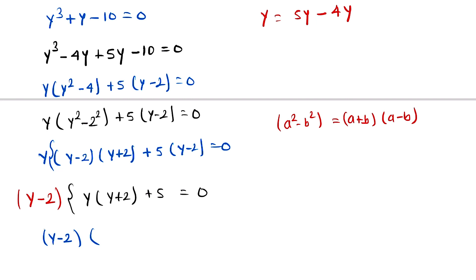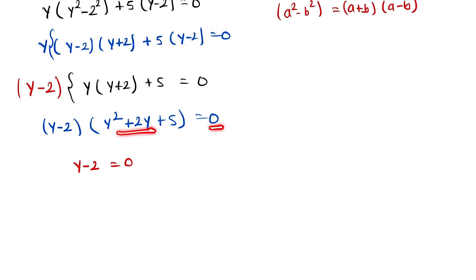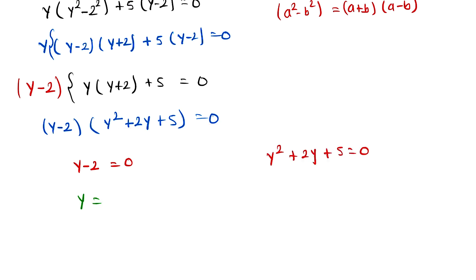Expanding, this gives two equations: y − 2 = 0, so y = 2; and y² + 2y + 5 = 0. For y = 2, this is a real solution. We now check whether y² + 2y + 5 = 0 gives real solutions by computing the discriminant b² − 4ac.